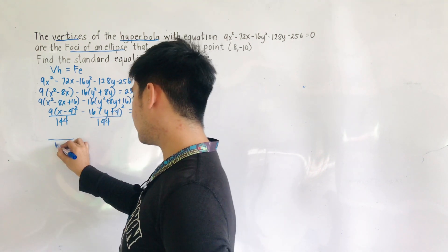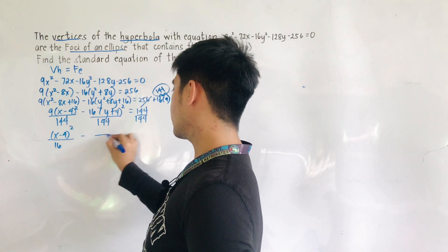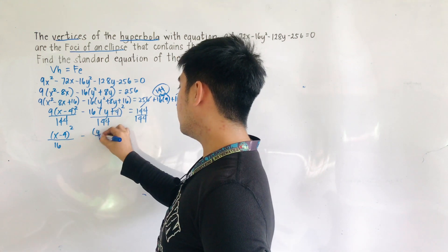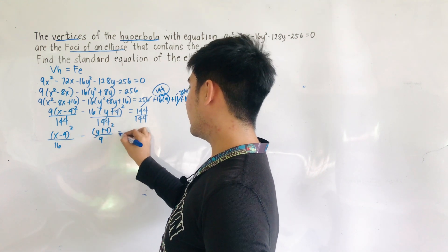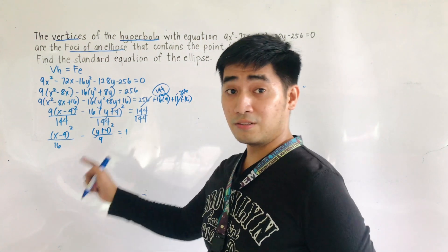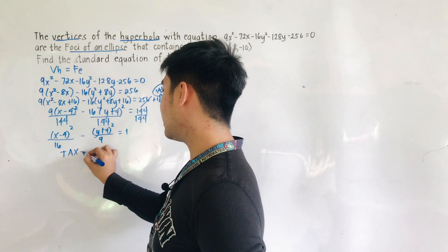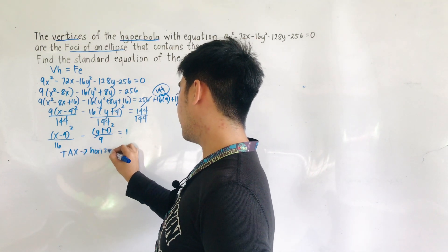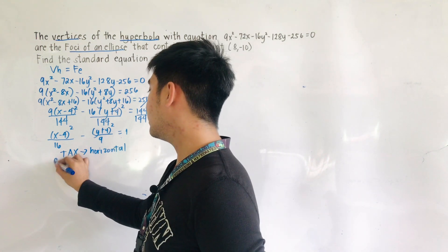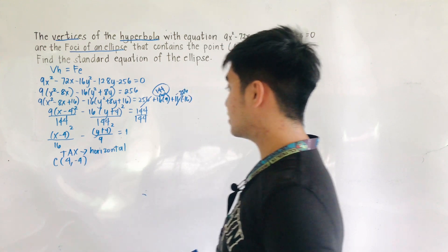144 divided by 9 is 16, and 144 divided by 16 is 9. So we get (x minus 4)² over 16 minus (y plus 4)² over 9 equals 1. Based on this equation — the standard equation of the hyperbola — this is a transverse axis horizontal. We can identify the center as (4, negative 4).